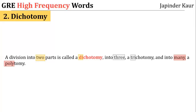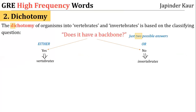Let's see some more examples of dichotomous classifications. The dichotomy of organisms into vertebrates and invertebrates is based on the classifying question: does it have a backbone? There are only two possible answers to that question — either yes or no.